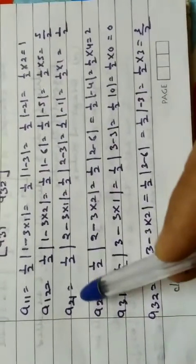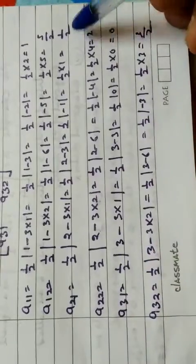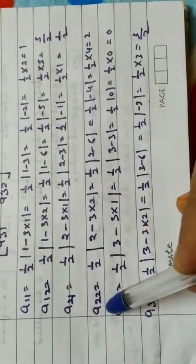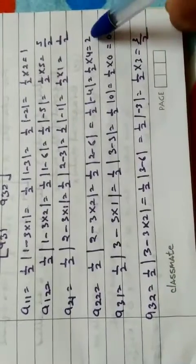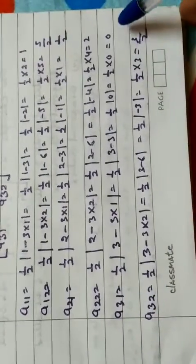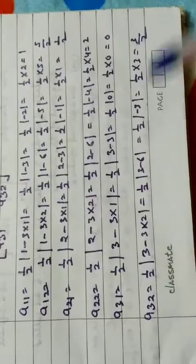Similarly we can find out the value of a21, a22, a31, a32. Value of a21 is 1/2, value of a22 here i is equal to 2 and j is equal to 2 we get 2, a31 is equal to 0, a32 is equal to 3/2. After getting these values we put it in the matrix.